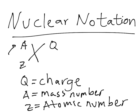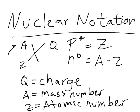To find the number of protons (p+), it is simply Z, the atomic number. To find the number of neutrons (n⁰), the formula is A minus Z — the mass number minus the atomic number. To find the number of electrons (e−), the formula is Z minus Q — the atomic number minus the charge. Those are the formulas you will use to find the subatomic particles.